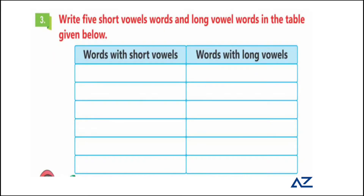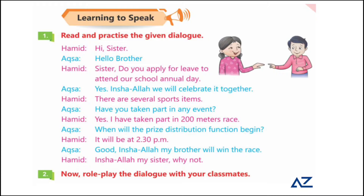Next, write five short vowel words and five long vowel words in the table given below. You can think of any words on your own, take help from your book, find words from the lesson, and discuss with your teacher and friends to find more words with short vowel sounds and long vowel sounds.